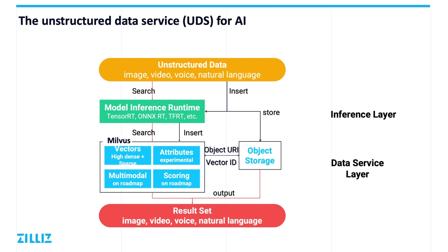Let's turn to the traditional hierarchical view. The top input and the bottom output are unstructured data. AI technology mainly functions in the middle two layers: the green layer being model inference, and the blue layer being the data service. The task of model inference is to transform unstructured data into feature vectors. Models are pre-trained, but serving them efficiently is not easy. There are already some mature projects in the industry, such as NVIDIA's TensorRT, Intel OpenVINO, and Microsoft ONNX Runtime.